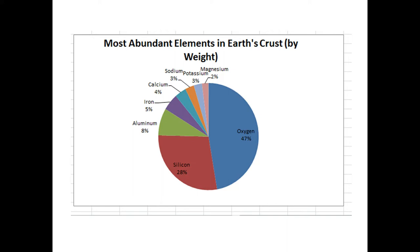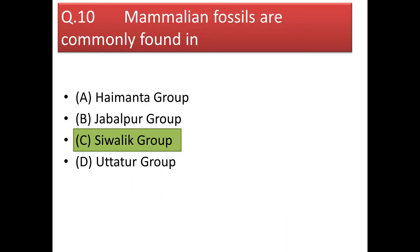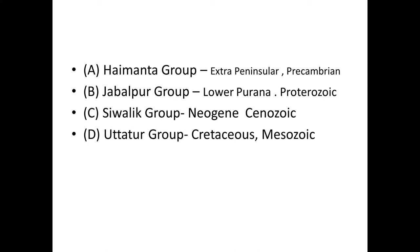Our answer will be oxygen. Next question: mammalian fossils are commonly found in? To answer this, you must consider when mammals flourished on the Earth's surface. Although mammals evolved in around the Mesozoic era, they flourished completely on the Earth's surface in the Cenozoic era only. The answer should be the Siwalik group, because its age is only Cenozoic.